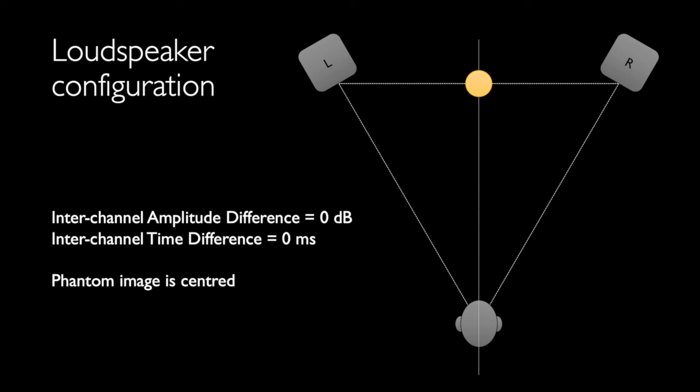From here to the end of the video, I'll go through 10 panning locations in case you want to use this for testing loudspeaker or headphone systems. Stereo phantom center: the interchannel amplitude difference is zero decibels and the interchannel time difference is zero milliseconds. The image should appear positioned in the center of the two loudspeakers directly in front of you.